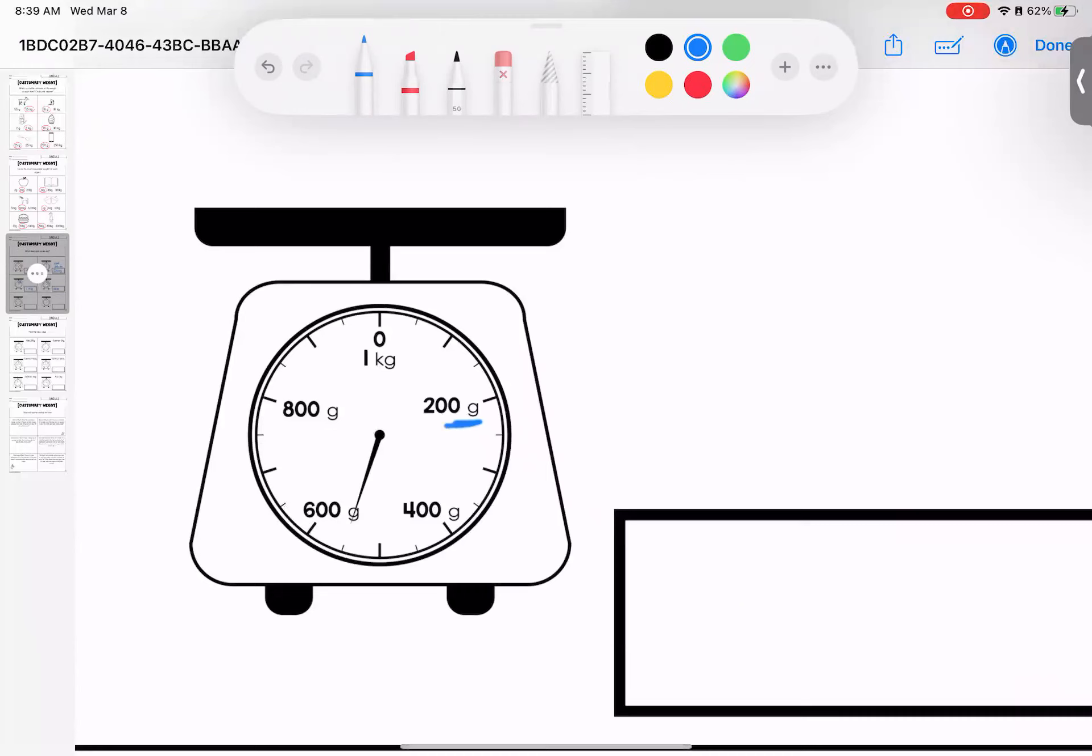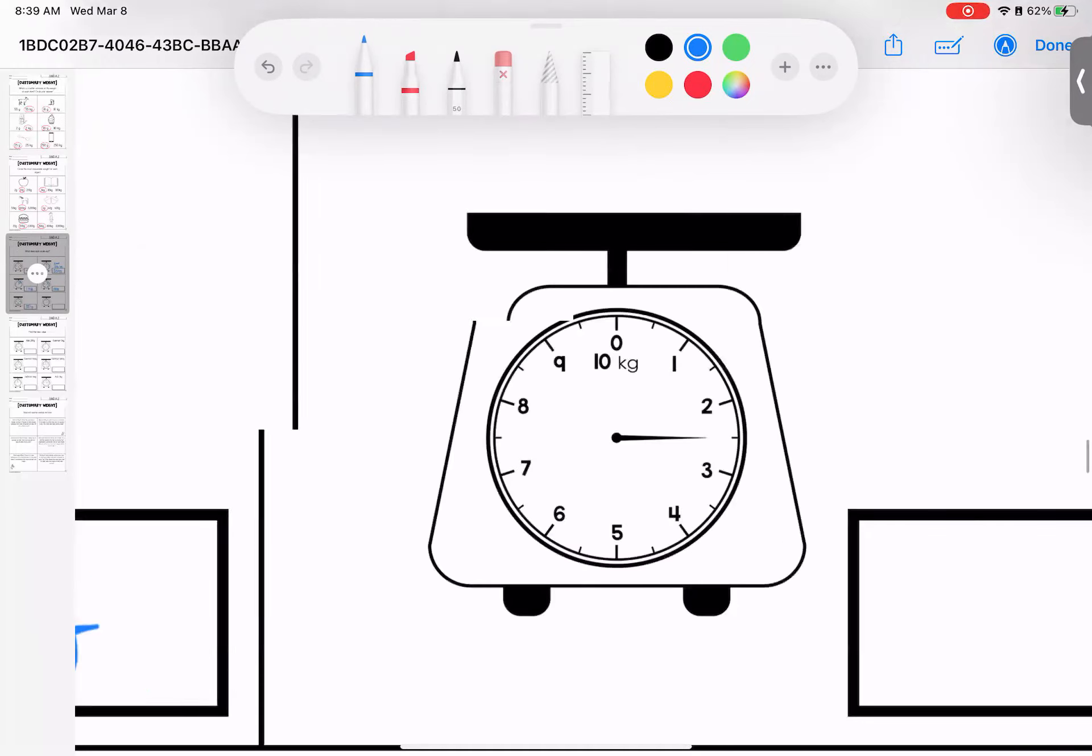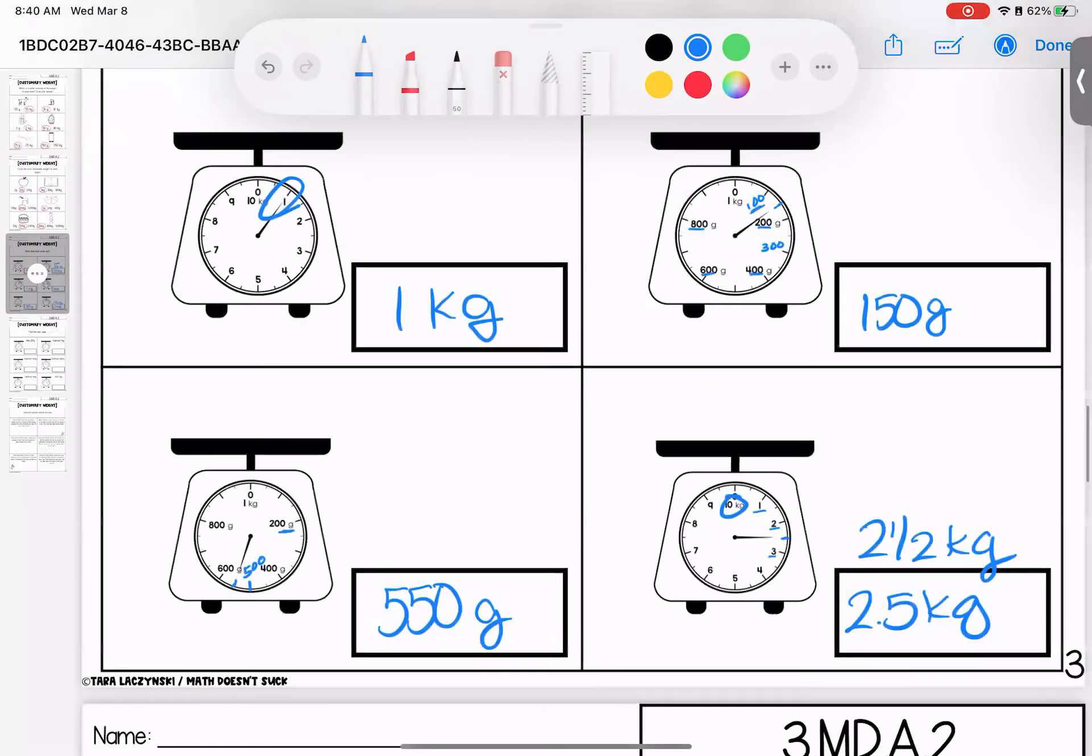Down here, we're measuring in grams. It's skip counting by twos. I see my long lines for my odds and my half lines for half. So this would be 500, the long line between 400 and 600, and half past. That would be 550 grams. Last one here, counting up by single digits with a half in between. This would be 2.5 kilograms or two and a half kilograms. Any questions on these kiddos? Bring them with you to class.